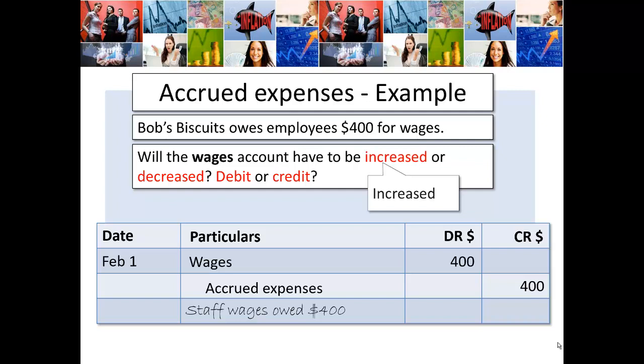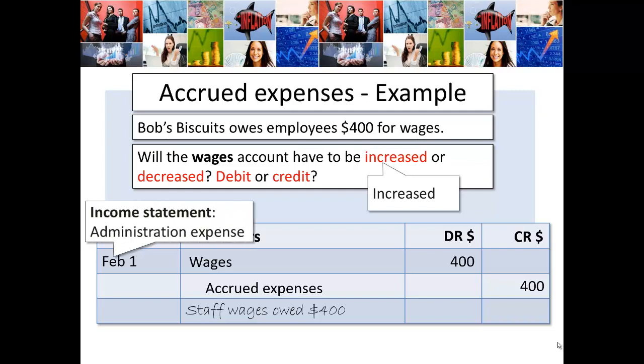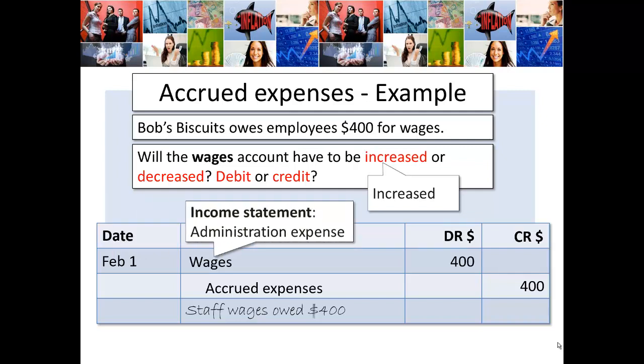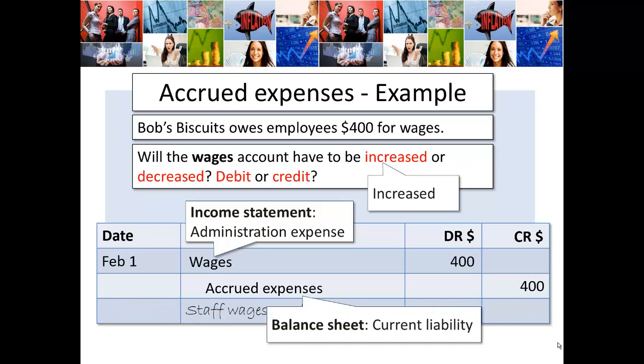And on the other side, the accrued expense — we've just identified that as a liability. That's going up $400 as well. Debit, credit — everything's balancing in that accounting equation of ours. In the income statement, this will be an administration expense (AE). And in the balance sheet, it's going to be a current liability.